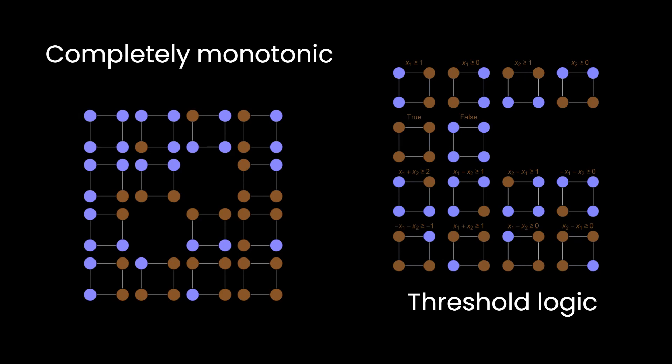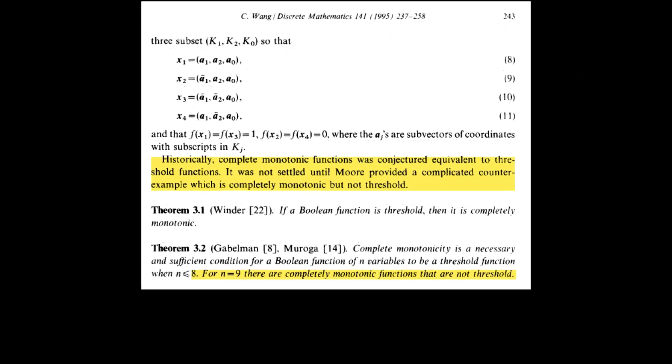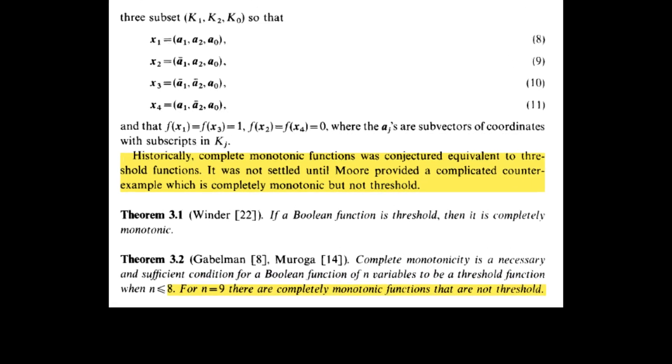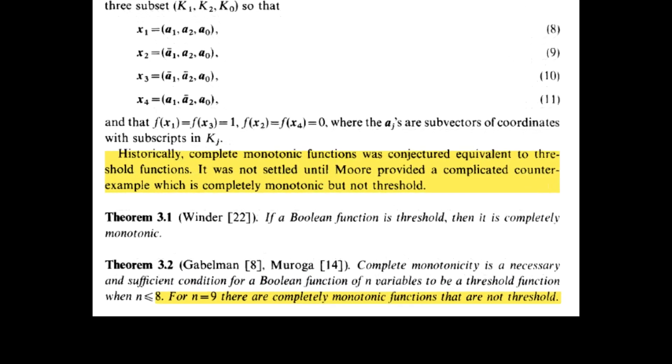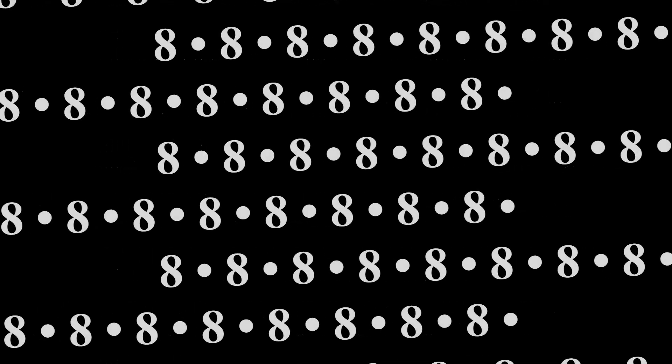However, it is possible to engineer completely monotonic functions in nine dimensions or higher that can be proven to be unrealizable by threshold logic. Why? Why only eight? We don't know yet.